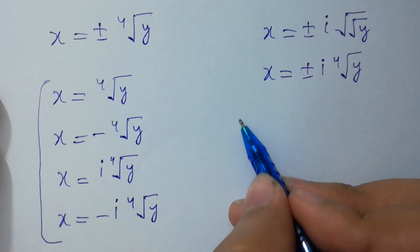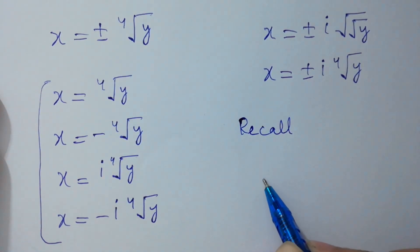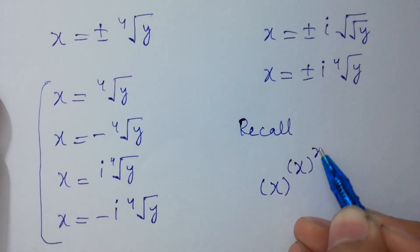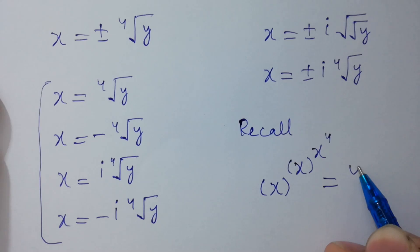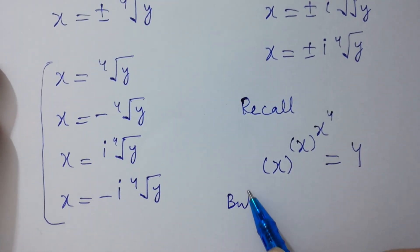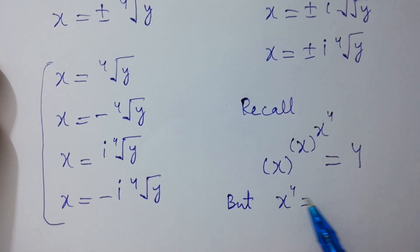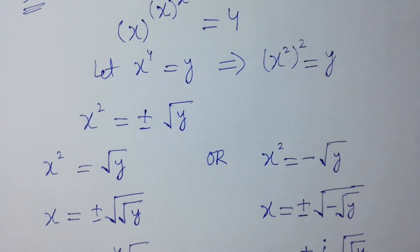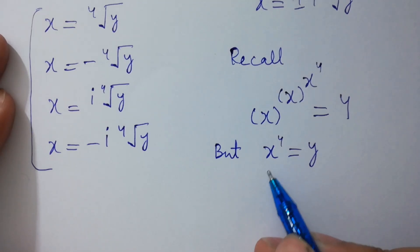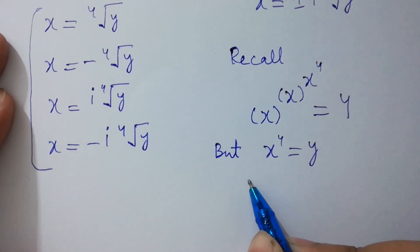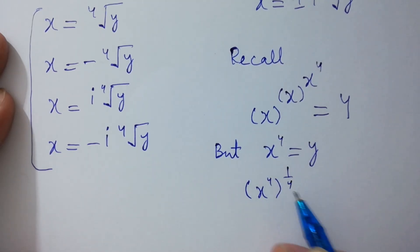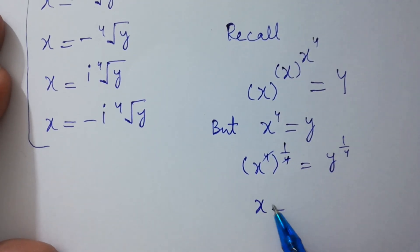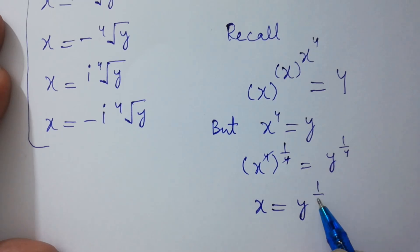We have four solutions for x to the power x to the power 4 equal to 4. Since x to the power 4 equals y, take the exponent of 1 over 4 on both sides — the 4s cancel — and we have x equal to y to the power 1 over 4.